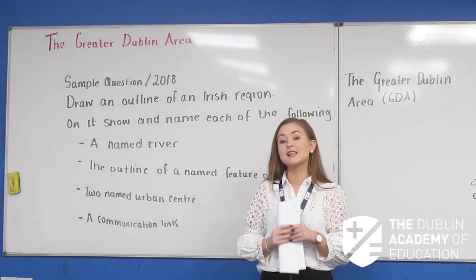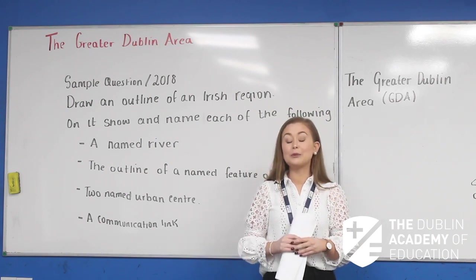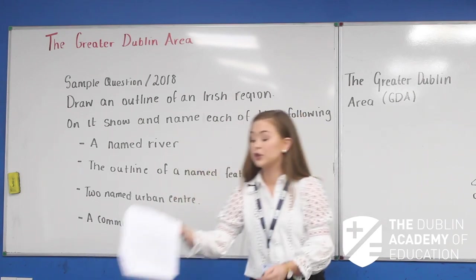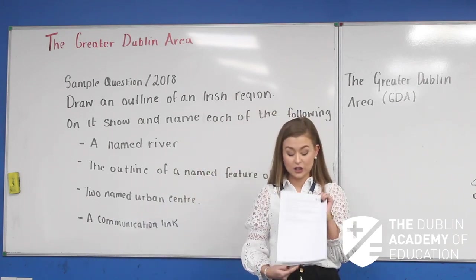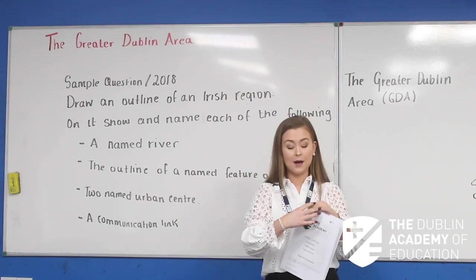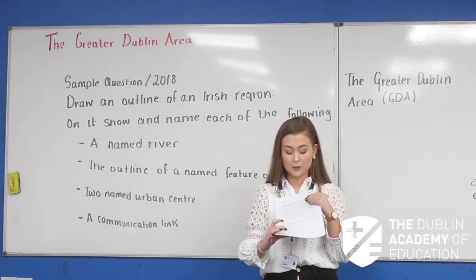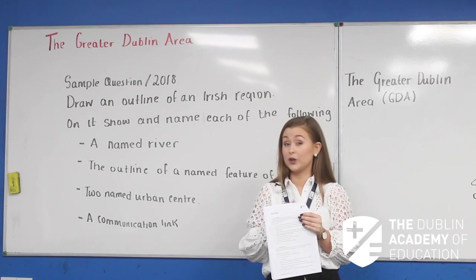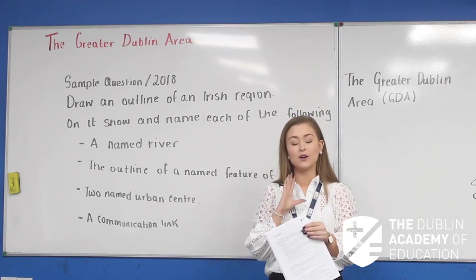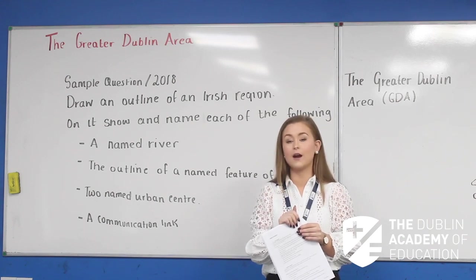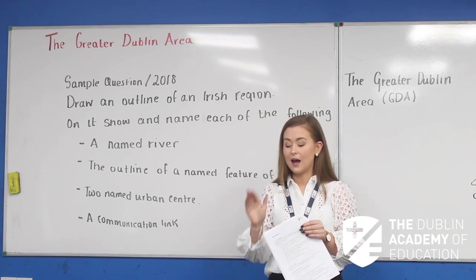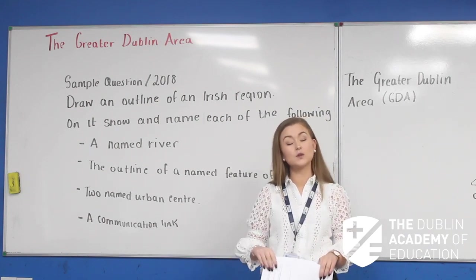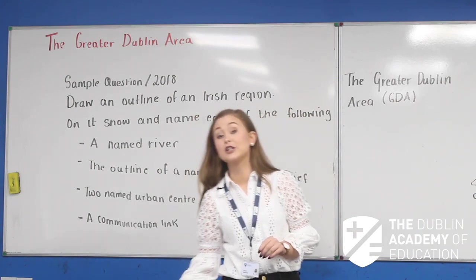The GDA is a core Irish region. If you're confused with the word core, pop over into the regional geography notes and go to page 32, and just read the definition of a core region and also the characteristics. If there's any confusion with the word core, pop over there and have a look. Pause the video, pop over there and get through it.